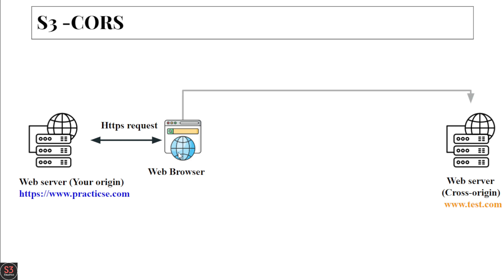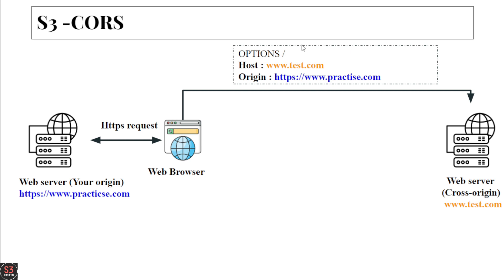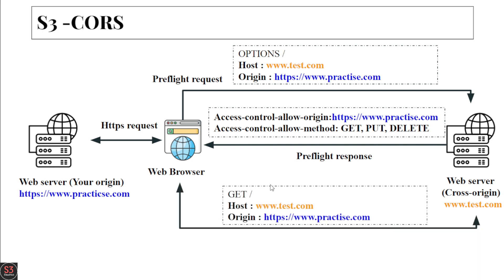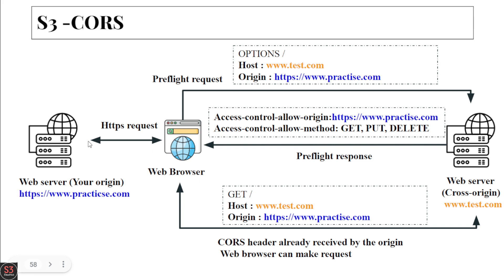Afterwards, the web browser makes a pre-flight request to the cross origin, including the options, host, and origin in the request. The cross origin responds with the pre-flight response, adding a header that says https://www.practice.com is allowed for methods like GET, PUT, and DELETE. The web browser then makes a GET request to the cross origin to get files, including host and origin — and receives the files while visiting the main origin.